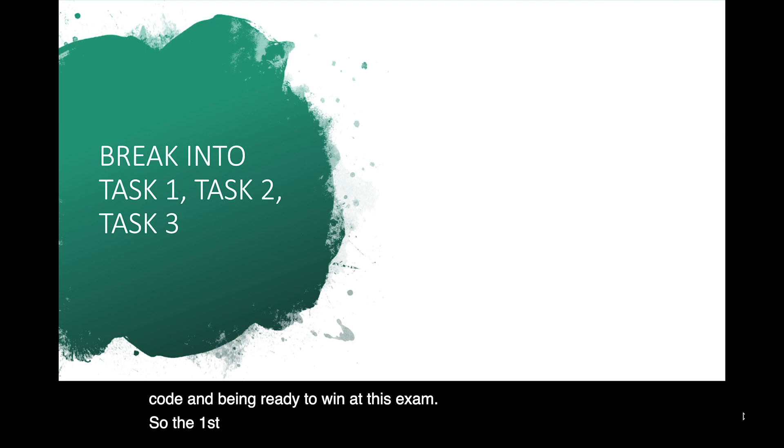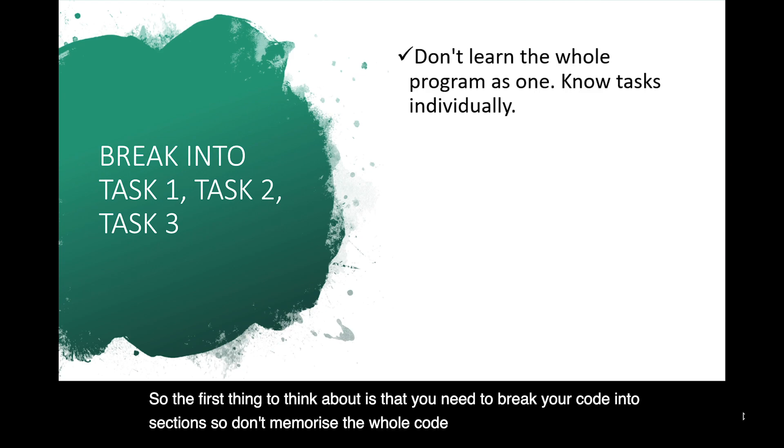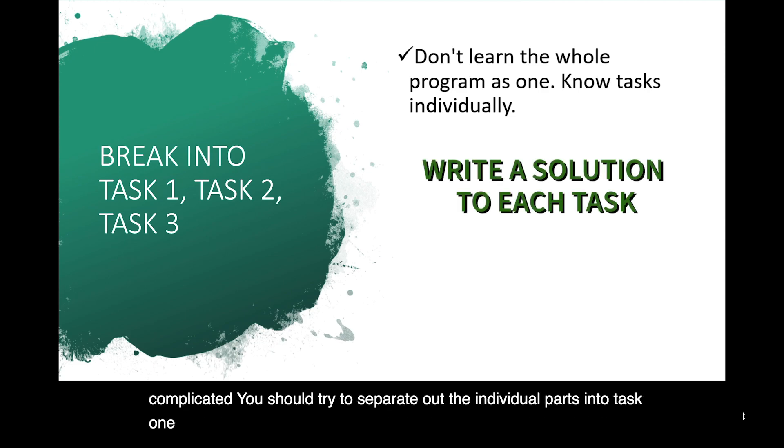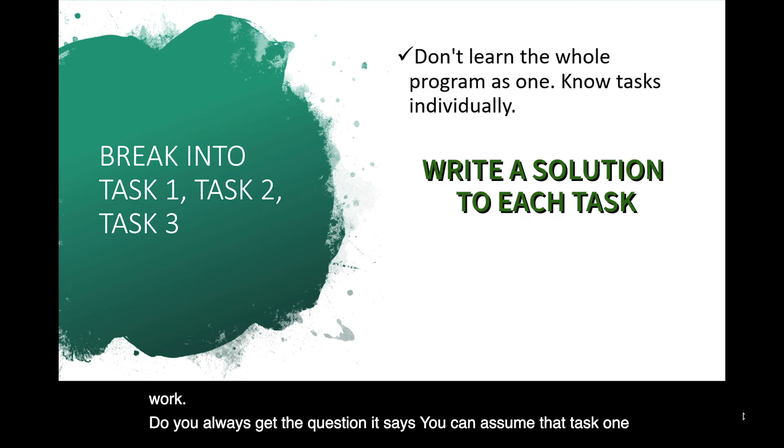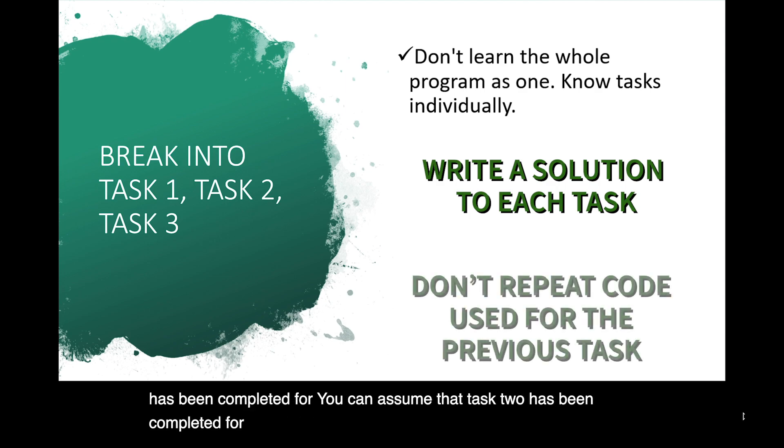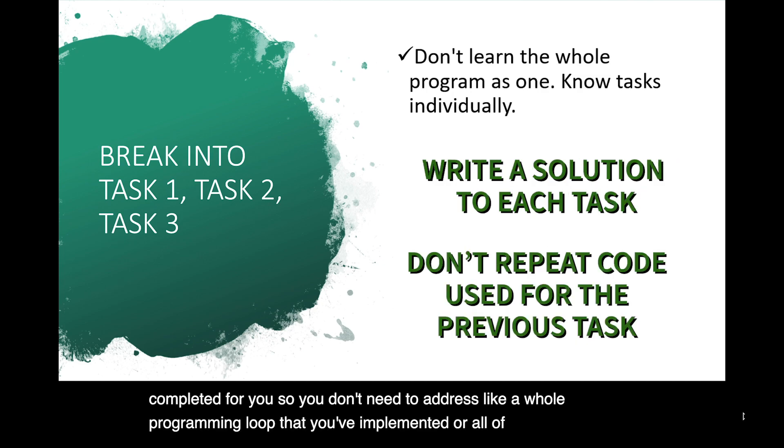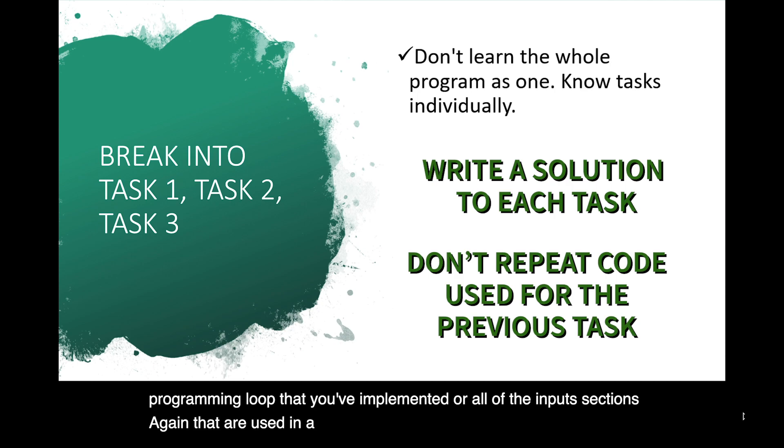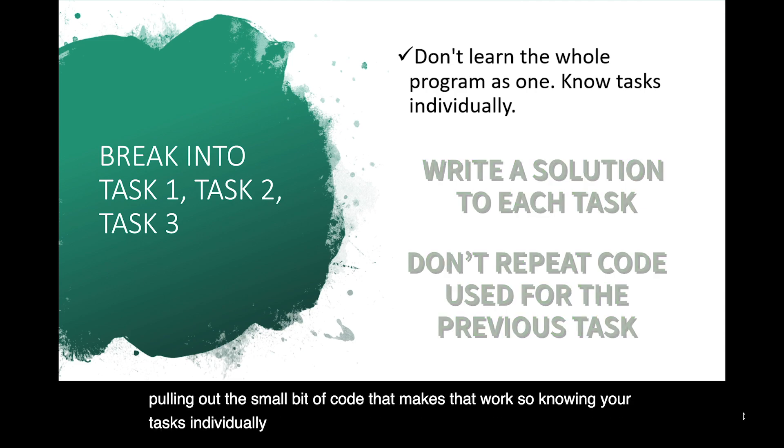The first thing to think about is that you need to break your code into sections. Don't memorize the whole code by itself. That's really complicated. You should try to separate out the individual parts into task 1, task 2 and task 3, like which exact bits of code make task 2 work. You always get the question, it says you can assume that task 1 has been completed for you. So you don't need to address a whole programming loop that you've implemented or all of the input sections again that are used in task 1 to answer task 3. You're just pulling out the small bit of code that makes that work. So knowing your tasks individually is going to really help you to answer the questions.